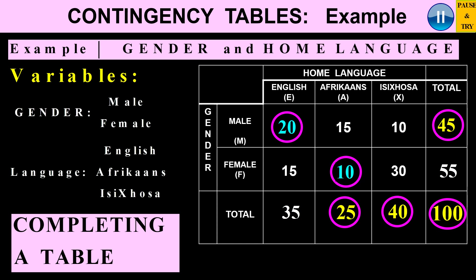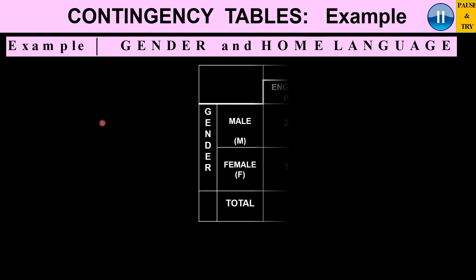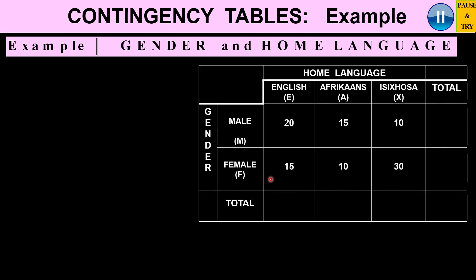We're going to show you how we can use a contingency or two-way table to determine probabilities. Let's consider this example: we have data regarding gender and home language. Gender is one variable and home language is the other. We have two categories for gender — male or female — and three for home language: English, Afrikaans, and Isizulu. We represent these as M and F, and E, A, and X. Now we just have to complete this table.